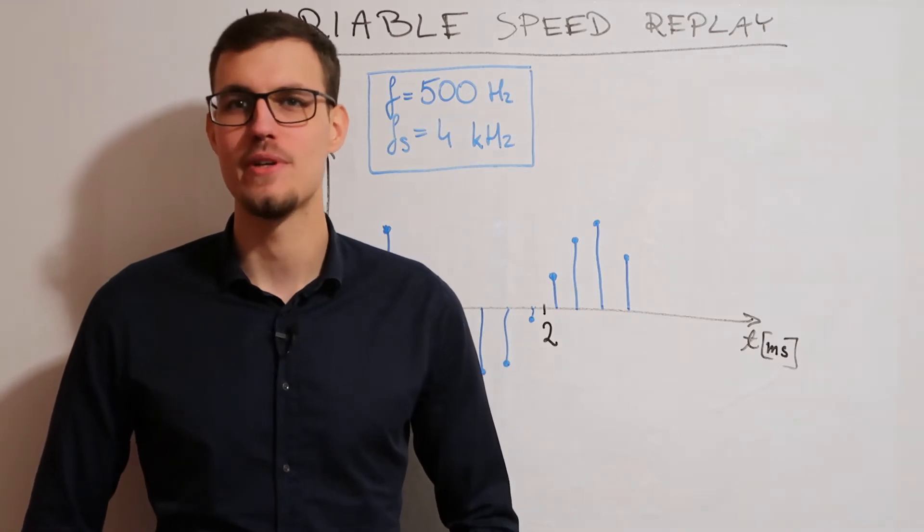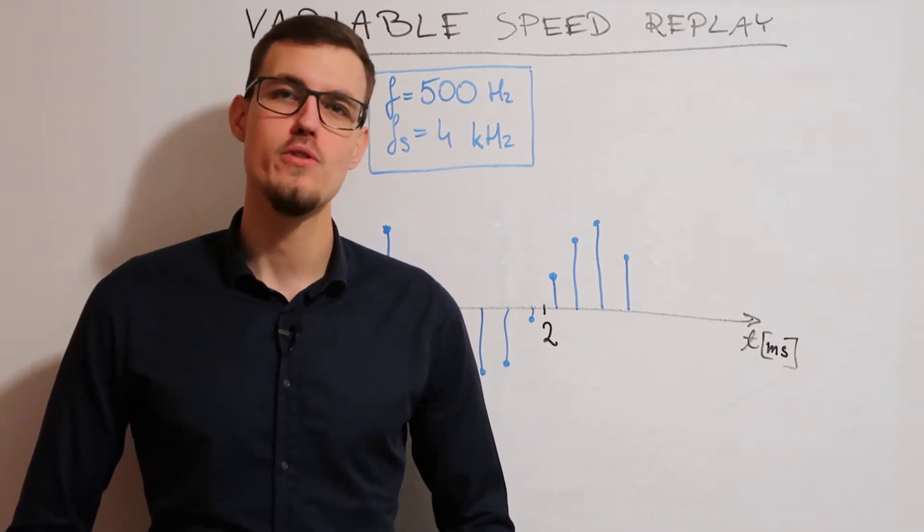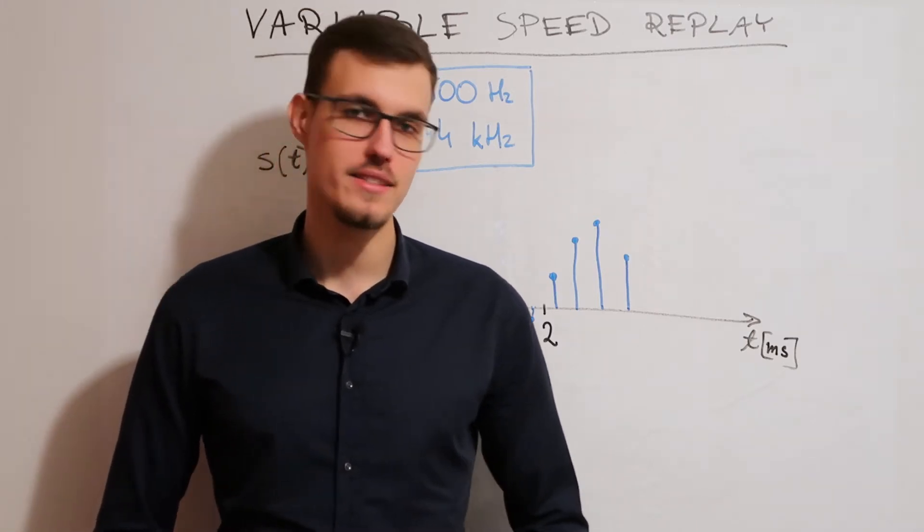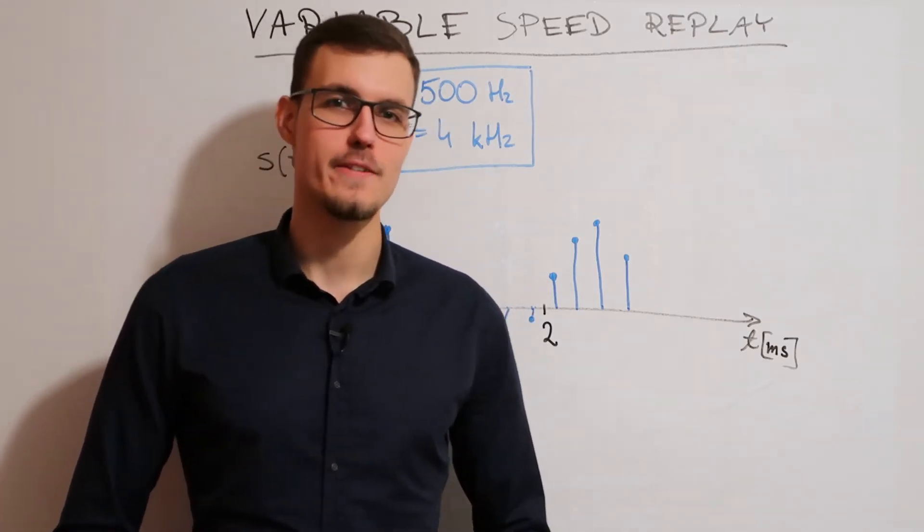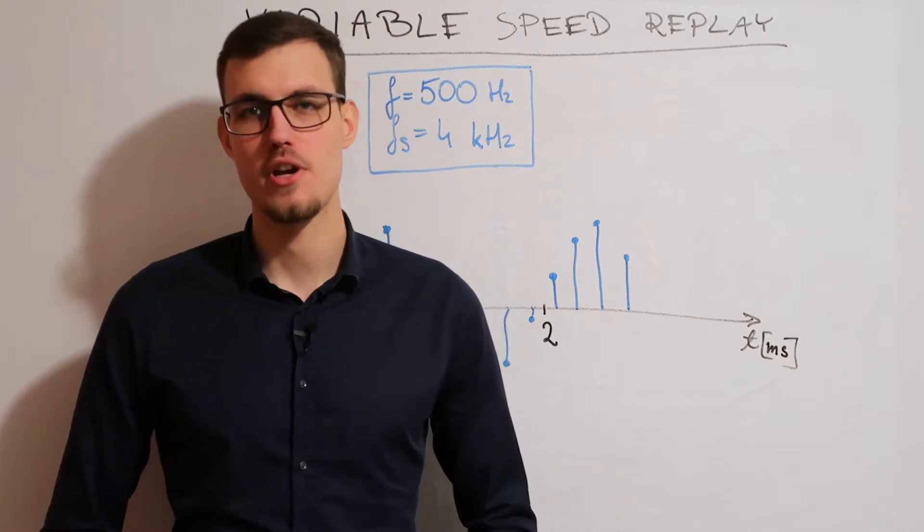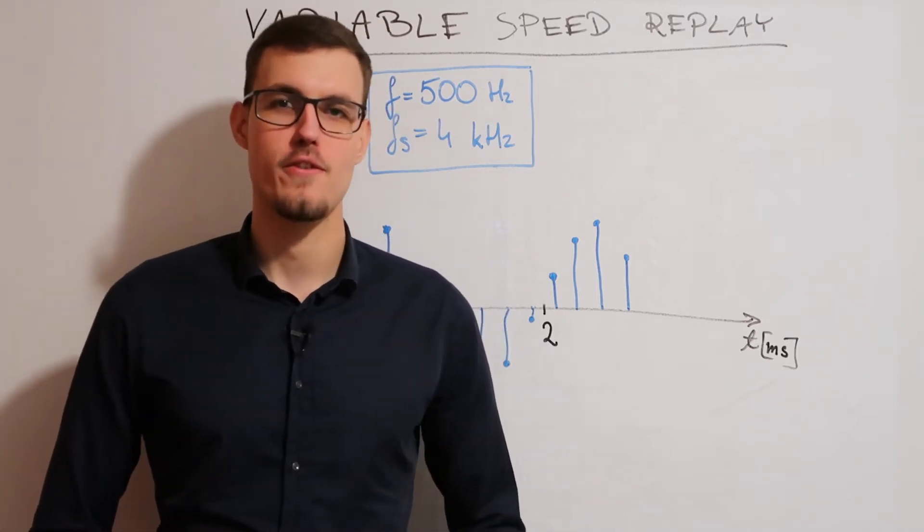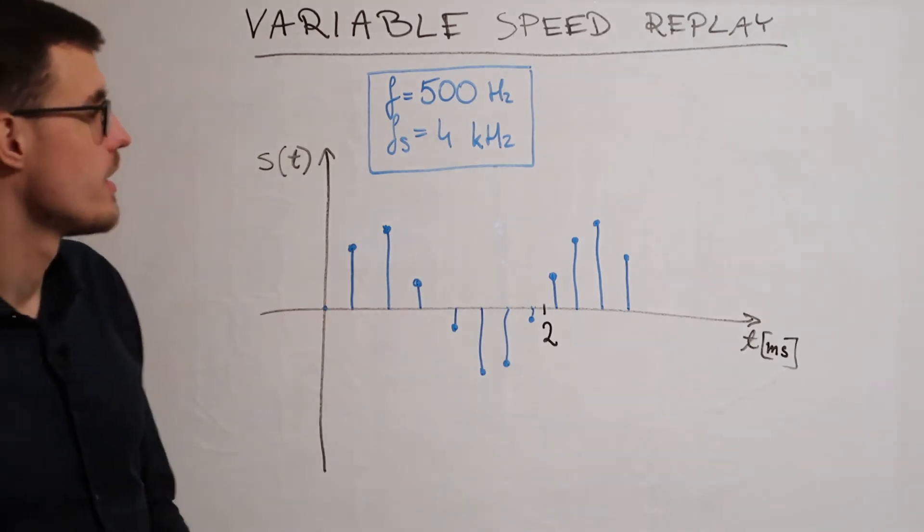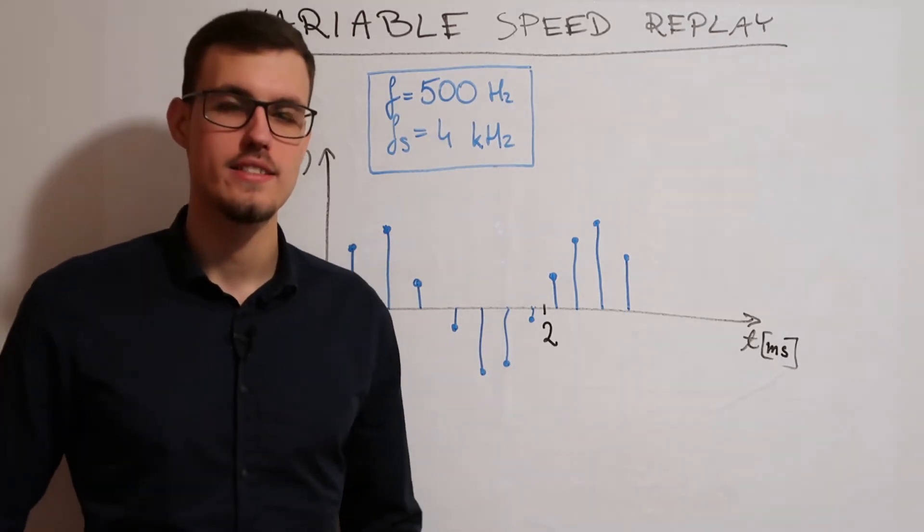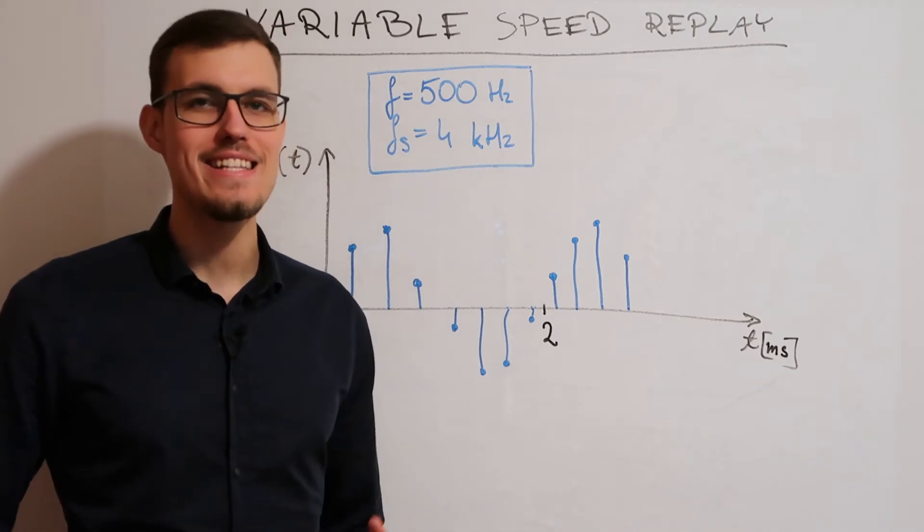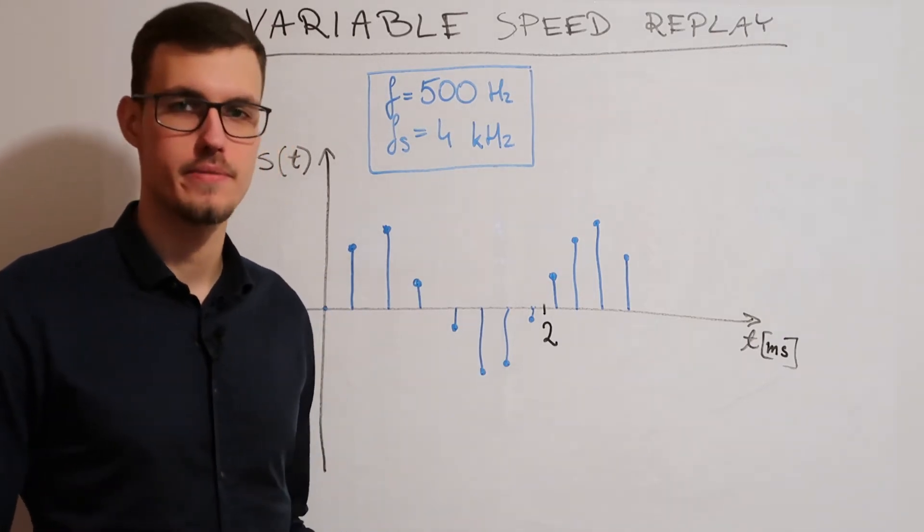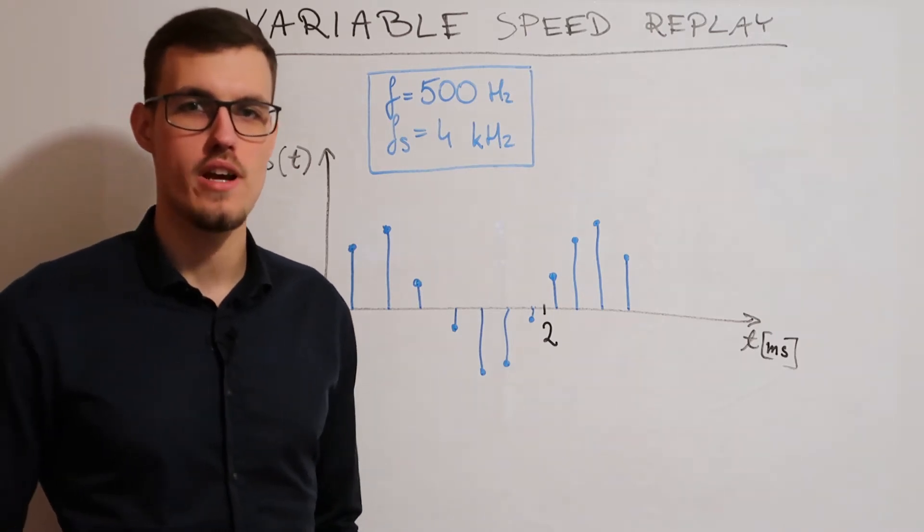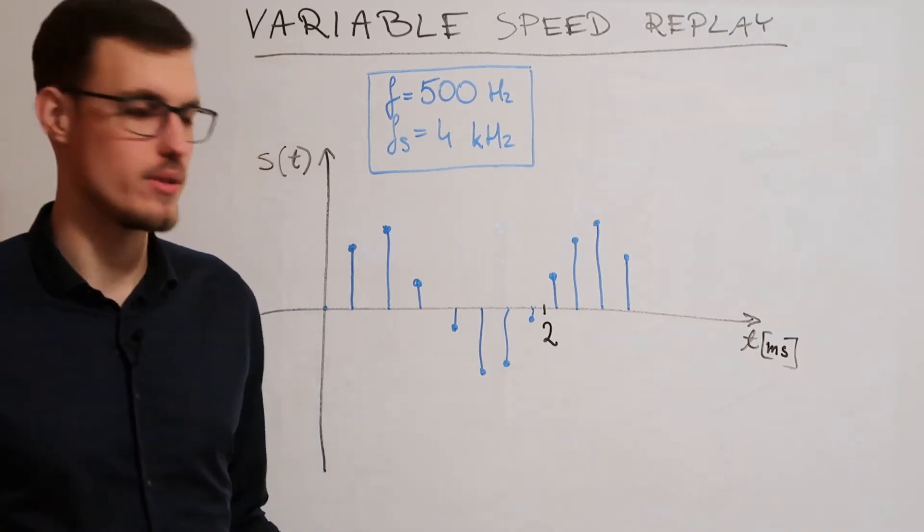First of all, let's consider what would happen if we removed every other sample from our signal. Let's assume that we have a sine at 500 Hz sampled at 4 kHz. We get exactly 8 samples per signal's period. Now, what happens when I remove every other sample?